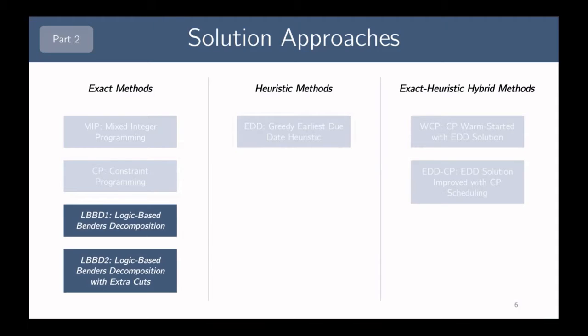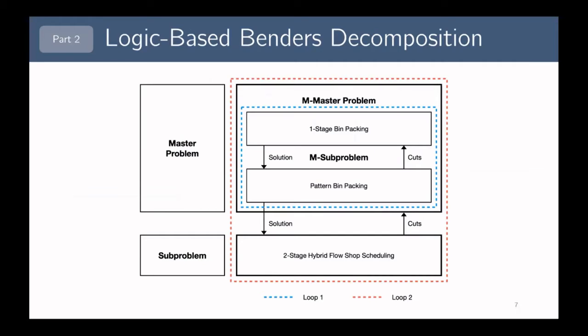Let's take a closer look at the two LBBD models because they have a fairly unique structure. The first model is actually a three-stage decomposition. A larger separation happens between the master problem and the sub-problem, where the master problem contains all of the packing decisions and the sub-problem contains all of the scheduling decisions. Within the master problem, there is a second separation: the master problem packs jobs directly into autoclave batches in a one-stage bin packing problem, and then we move to the M sub-problem to partition these jobs into feasible tool batches, which we call a pattern bin packing problem.